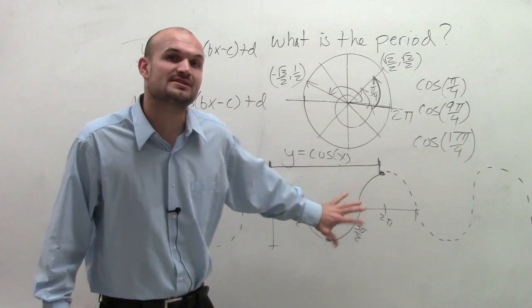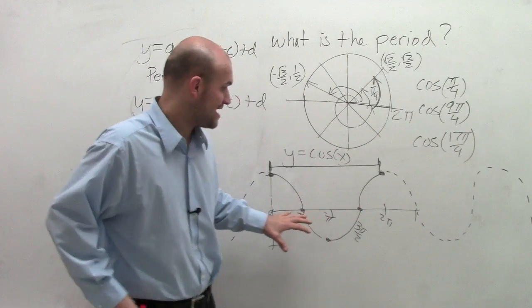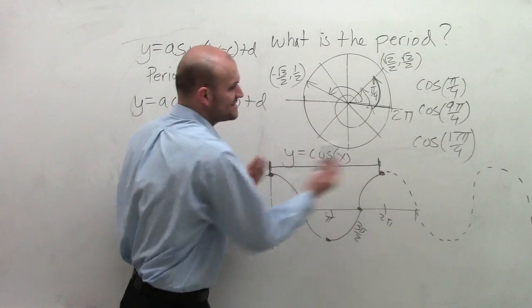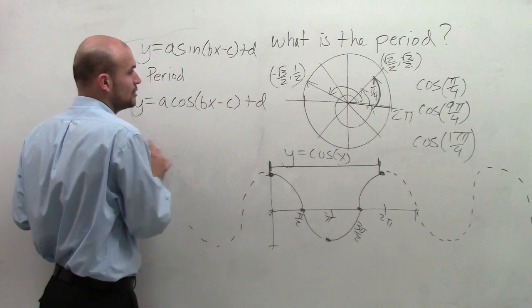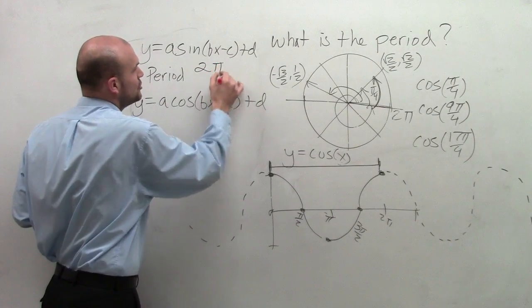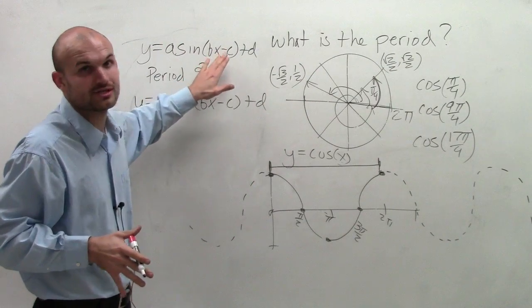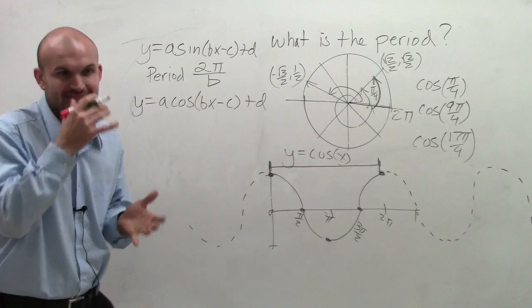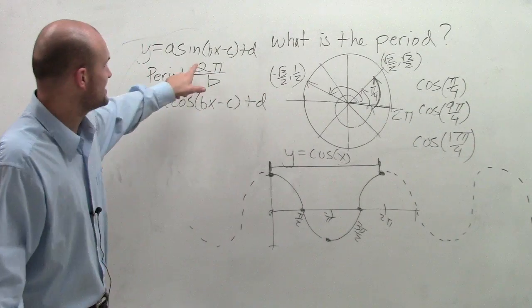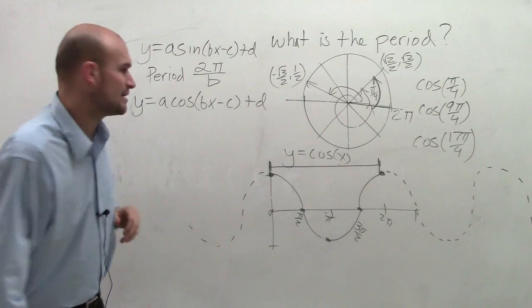it's the exact same thing for the sine graph. But this distance is 2 pi. So you can say the period of all sine and cosine graphs is going to be 2 pi, unless you have an alteration or a transformation of b. So if you have a number that's going to be in there for b, you're going to take 2 pi and divide it by b. And that works for both sine and cosine graphs.